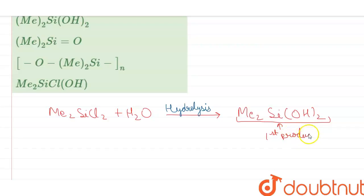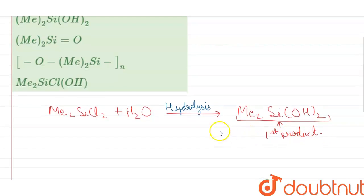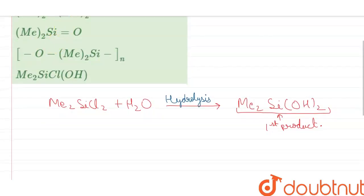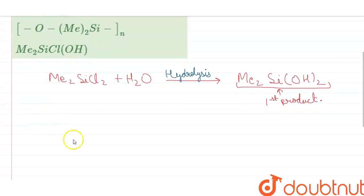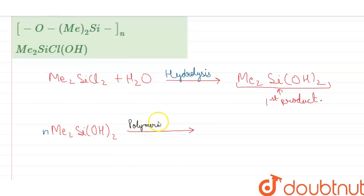Which undergoes polymerization reaction to form a polymer. So n molecules of Me2Si(OH)2 goes under polymerization to form the polymer.